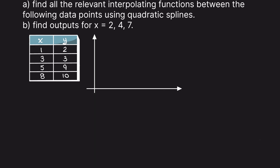The first thing I'm going to do is go ahead and plot our data points so that we can better visualize what we are being asked to solve. Plotting the data that we were given looks like this. It is clear that there are going to be 3 splines that we are going to have to find, which makes sense as our number of splines, n, will always be one less than the number of data points that we are given.